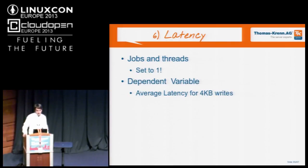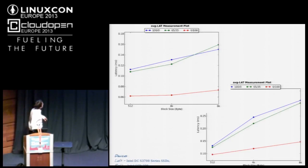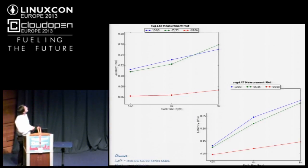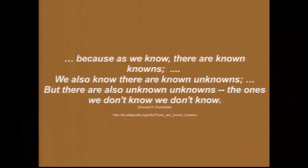The last test is latency — we want to find out how many milliseconds it takes to respond to our IOPS requests. We have the Intel 320 SSD, which is also a consumer SSD, compared again with an Intel enterprise SSD. The latency stays quite stable for the enterprise SSD, while it increases a bit for the consumer SSD.